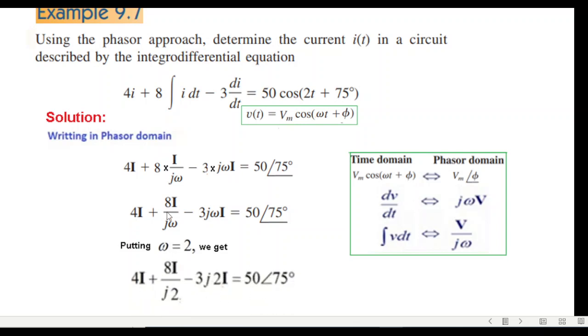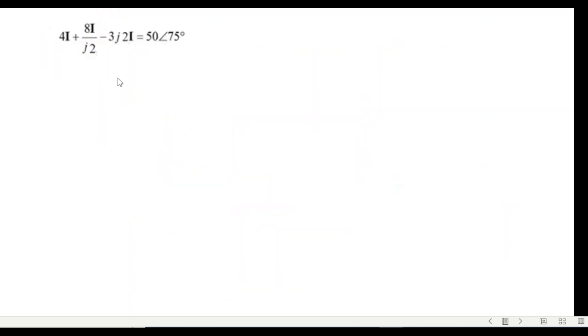And so our equation will be 4i plus 8i divided by j2 now, and this is minus 3j2i equals 50∠75°. So we were here, we will now simplify it. And this is an important formula. I'm sure everybody must have learned, but we'll follow this. If there is a 1 over j, it can be written as minus j. And we can go through this. So 1 over j here, we'll write it as minus j.